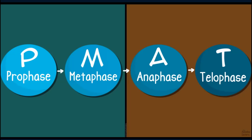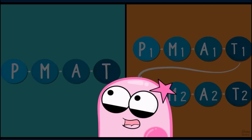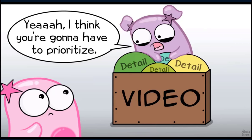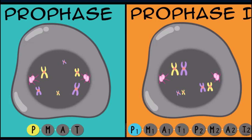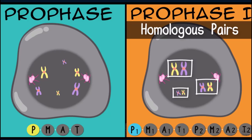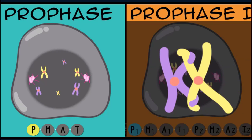The acronym PMAT is helpful for understanding stages — both mitosis and meiosis go through these stages, but meiosis goes through them twice, with a number next to each stage. In prophase of mitosis, chromosomes are visible and condensing. In prophase one of meiosis, chromosomes also condense but match up with their homologous pairs — chromosomes of approximately the same size containing the same types of genes in the same locations, one from mom and one from dad.